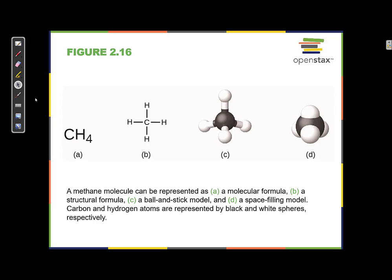Representation C is that same compound, but now we're seeing some three-dimensionality. Representation B is kind of flat, and in C, you can see that one group kind of pops out and two of those groups kind of go back a little bit, so this adds some three-dimensionality to the structure.